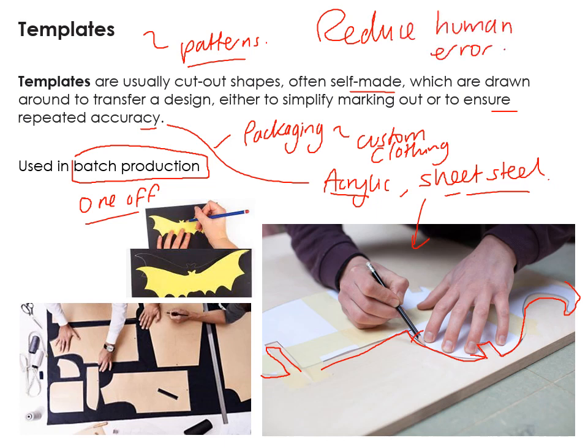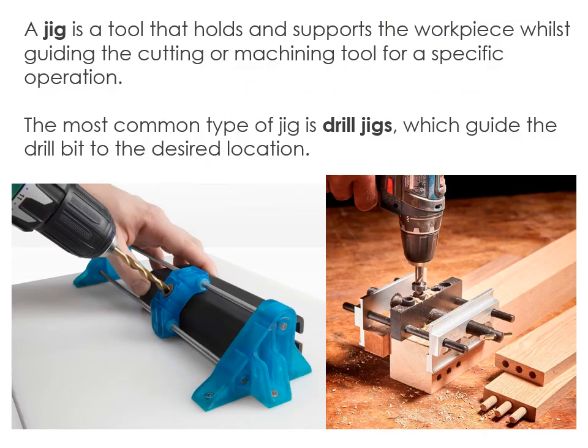A key advantage of all production aids is that they reduce human error. Rather than someone using a metal ruler to measure things out — which takes a long time and can still go wrong — a template ensures accuracy. Getting a measurement wrong can cost a lot of time and money.